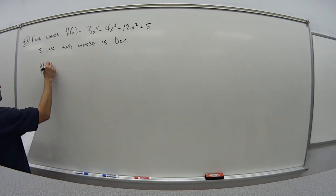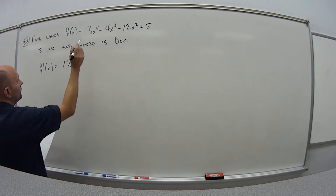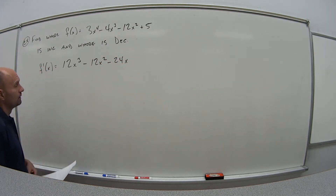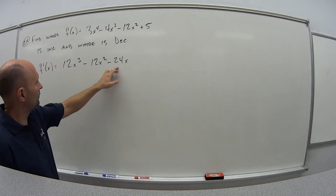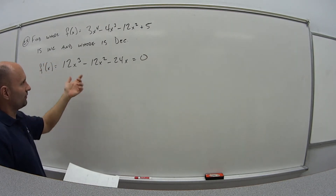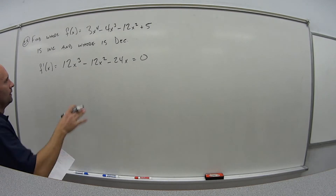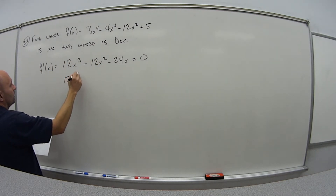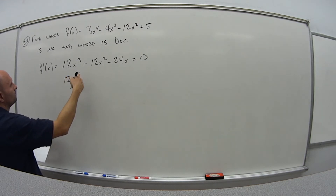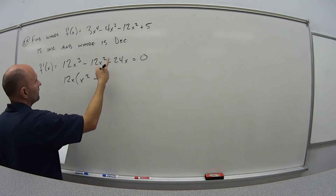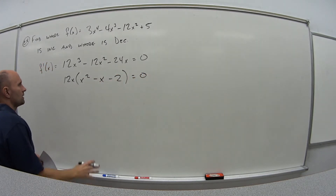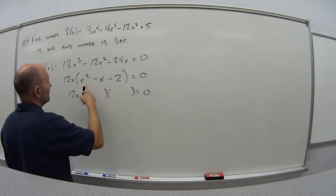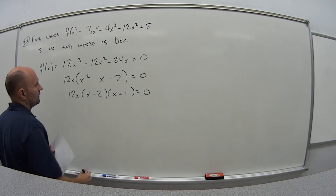Let's figure out the derivative. The derivative of this function is 12x cubed minus 12x squared minus 24x. The critical numbers are where this whole thing equals zero — it's also where it does not exist, but since we don't have a denominator that's not a concern here. I can factor out 12x from the whole thing and get x squared minus x minus 2, which factors nicely into (x minus 2)(x plus 1).